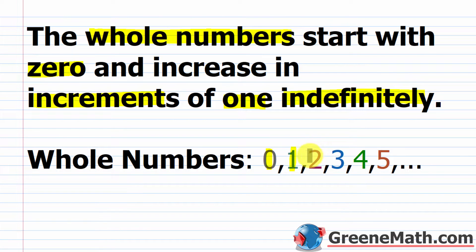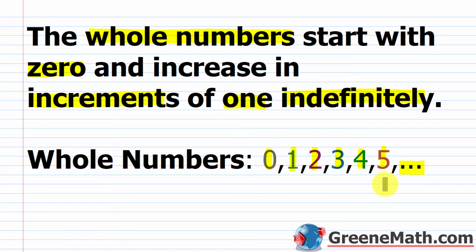You can just keep adding one: so you go to two, then three, then four, then five. There's not a largest whole number — you can keep adding one to get to the next largest whole number. At some point you stop and put your final comma and then three dots, which tells you the pattern continues forever. So after five comes six, then seven, then eight, then nine, and so on and so forth.